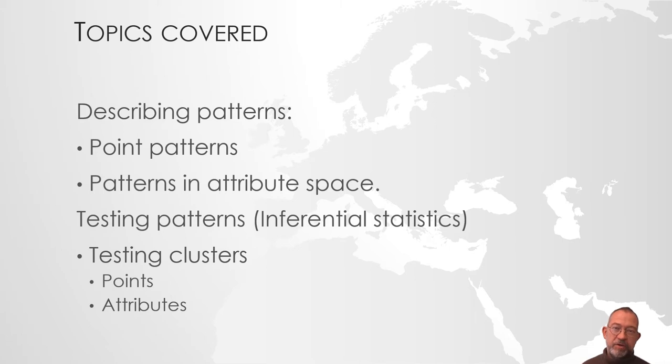An example: is it so that if you have municipalities with a low educational level, they will also have a low income? We will talk about that there is a cluster in our attribute space, that where we have low income, we also have low education. So that's what we talk about when we talk about patterns in attribute space.